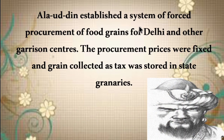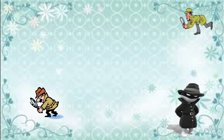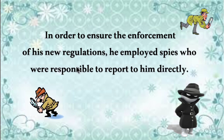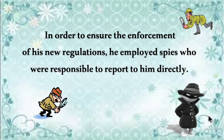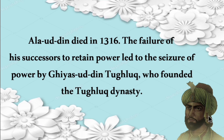Ala Uddin established a system of forced procurement of food grains for Delhi and other garrison centres. Procurement prices were fixed and grains collected as tax were stored in state granaries. To ensure enforcement of these regulations, he employed spies who reported directly to him.